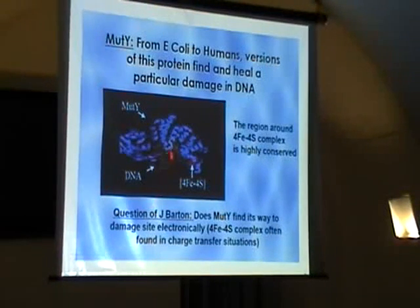Okay, so this is what the object of interest is here. The protein MuY, which is the name given to it in E. coli, is given a similar name in humans. Basically, this protein exists in every organism, from humans down to E. coli, every organism that has a genome. And versions of this protein find and heal a particular damage site in DNA. I'll tell you about that in a minute. What's interesting is that not all aspects of the protein are conserved. And the human version is a little bit bigger than the E. coli version. It recruits a few more proteins to the process than it does the E. coli version. But very conserved from E. coli to us is a region around this iron-sulfur complex.